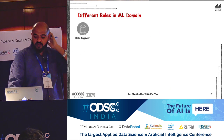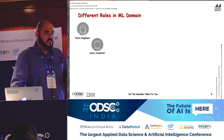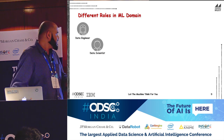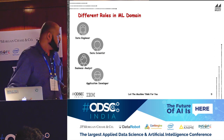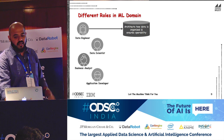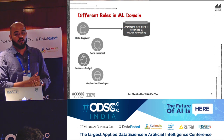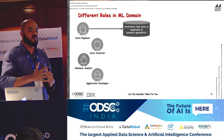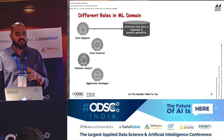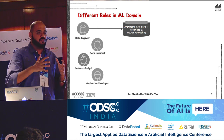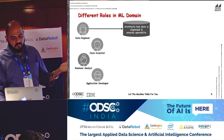There are different roles in ML. We have a data engineer, data scientists — I think a lot of you are data scientists here — business analysts, and application or software developers. The data engineer architects how data will be used and stored. He gets data from various different inputs, cleans it, and stores it accessibly, so the data scientist gets a clean dataset to build a good model from. It's a very important role.